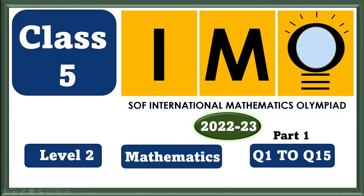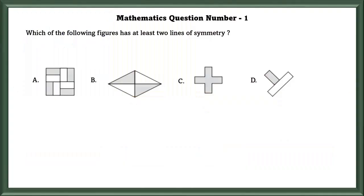Class 5 IMO Level 2 Mathematics Question 1 to Question 15. Mathematics Question No. 1: Which of the following figures has at least two lines of symmetry?